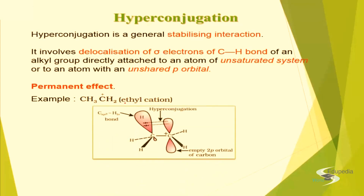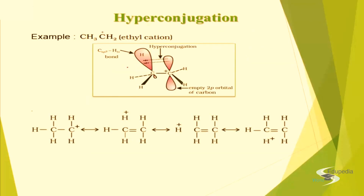For example, take the ethyl cation. In the ethyl cation, it has only six electrons, so one p orbital will be vacant. Now this sigma bond between carbon and hydrogen will start interacting, and there will be delocalization of this sigma electron. It will shift this C-H bond to this C-C bond, and there will be a carbon-carbon double bond and H+. Looking at CH3CH2+, the interaction can take place between any of the C-H bonds on the alpha carbon, generating different hyperconjugating structures.